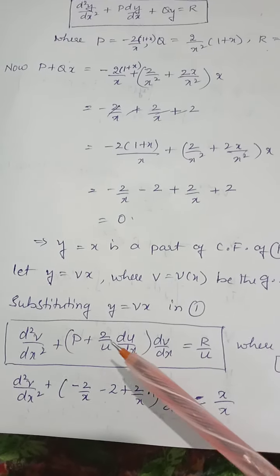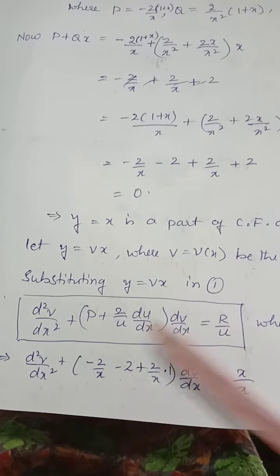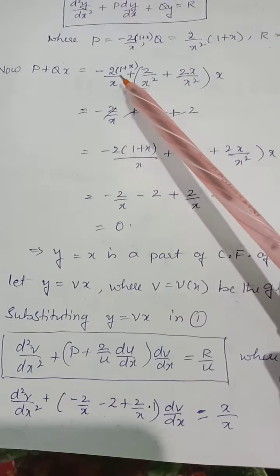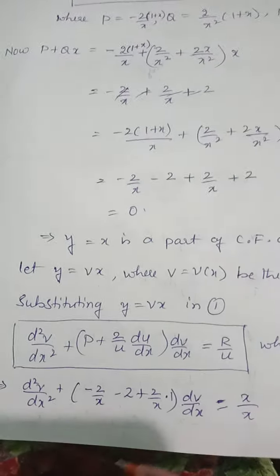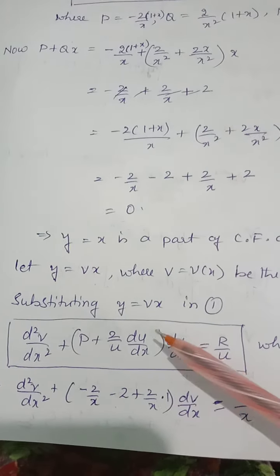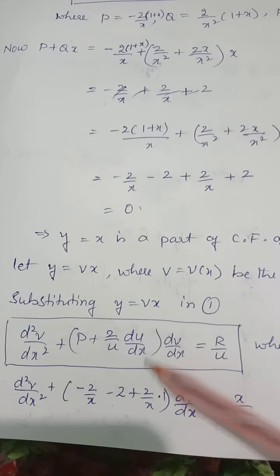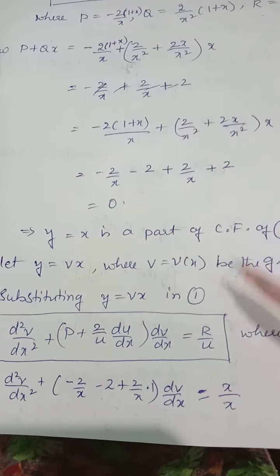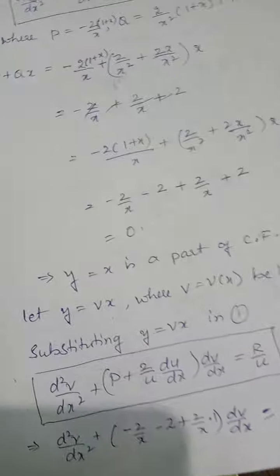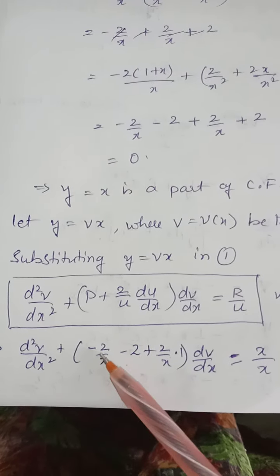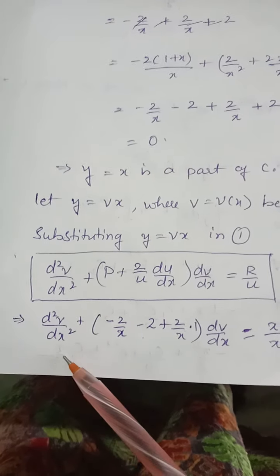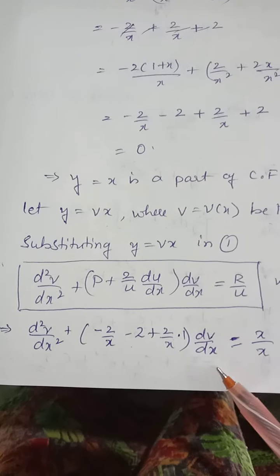Substituting P = -2/x · (1+x), u = x, and R = x into the equation: d²v/dx² + [-2/x·(1+x) + 2/x · (d/dx of x)](dv/dx) = x/x. Since du/dx = 1, the -2/x and +2/x terms cancel, and x/x = 1, leaving d²v/dx² - 2(dv/dx) = 1. This is equation 2.